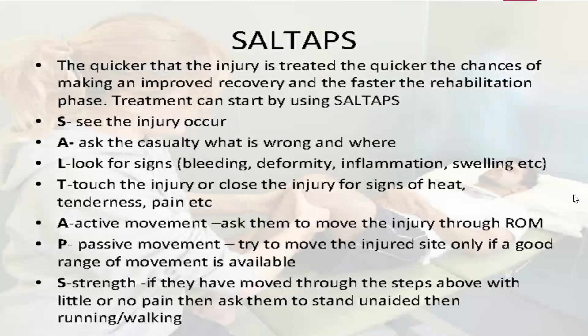Continuing SALTAPS: A stands for active movement — ask them to move the injured area through range of motion, checking for any end feel or tightness. P stands for passive movement — try to move the injured side only if a good range of movement is available. S stands for strength — if they have moved through the steps above with little or no pain, then ask them to stand unaided, then running and walking.